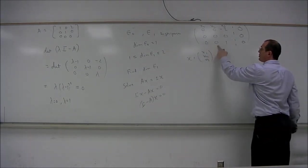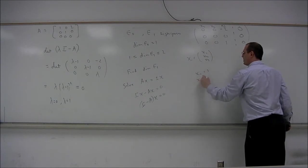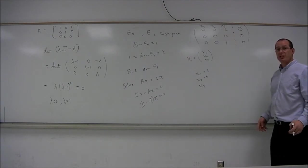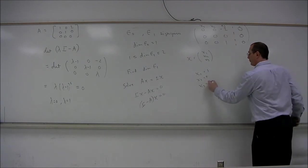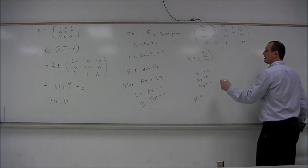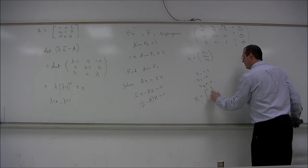So X1 and X2 are free variables. X1 is S, a parameter. X2 is T. And X3, from either the top row or the bottom row, X3 is equal to 0. So X, the vector X, the solutions to this equation, the eigenvectors, have the form S, T, 0.